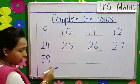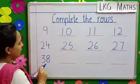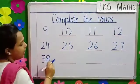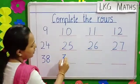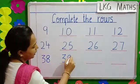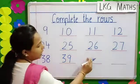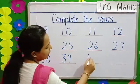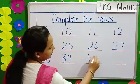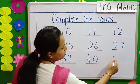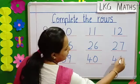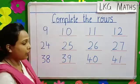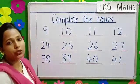Then, we come down again to the next number. Number 38. After 38, 39. After 39, 40. After 40, 41. So, children, we have completed all the rows.